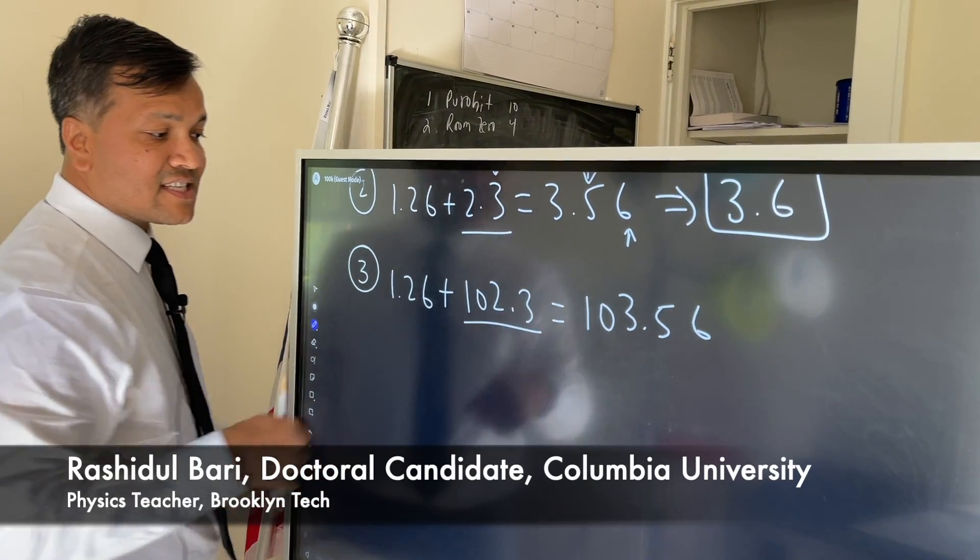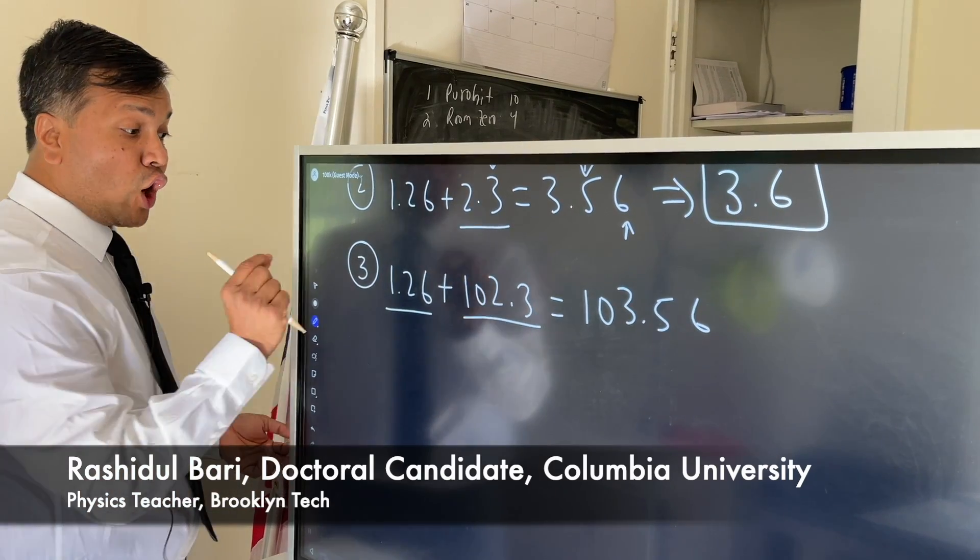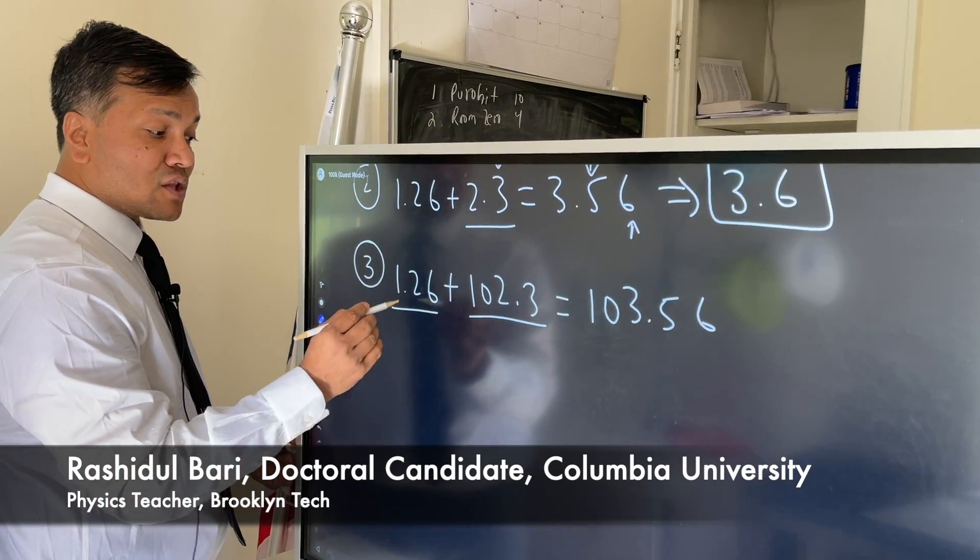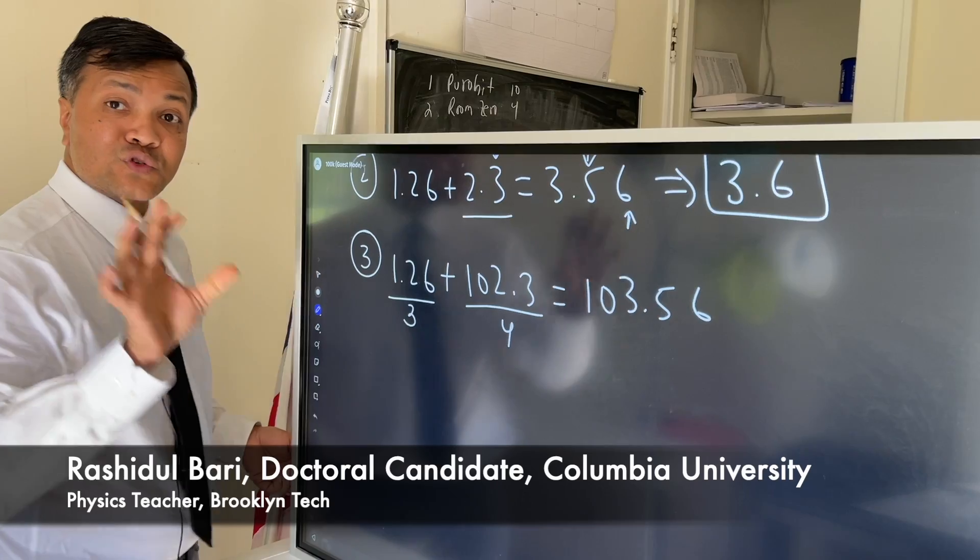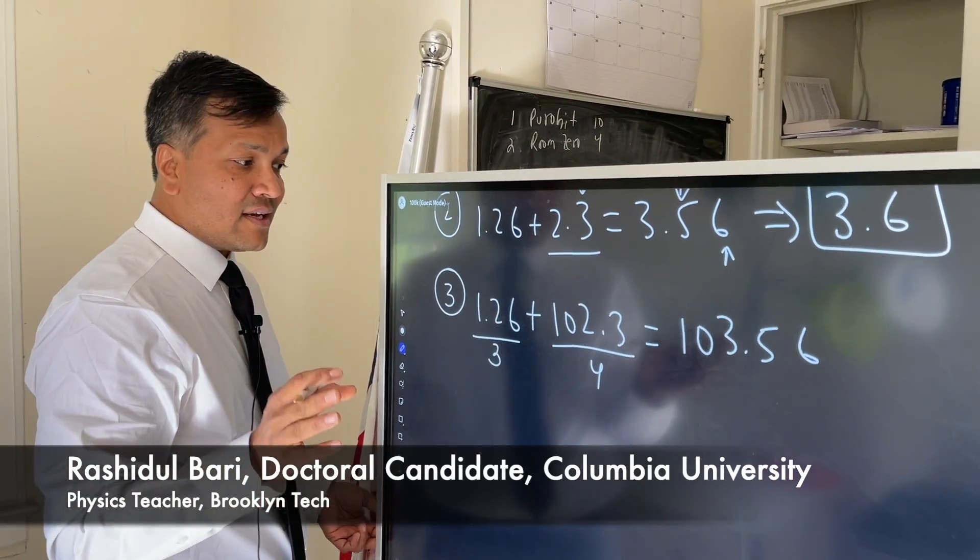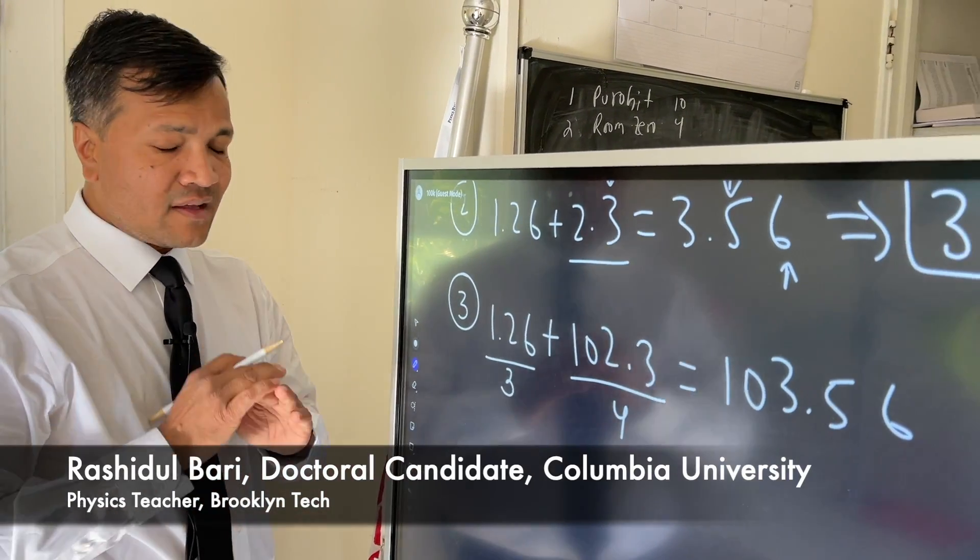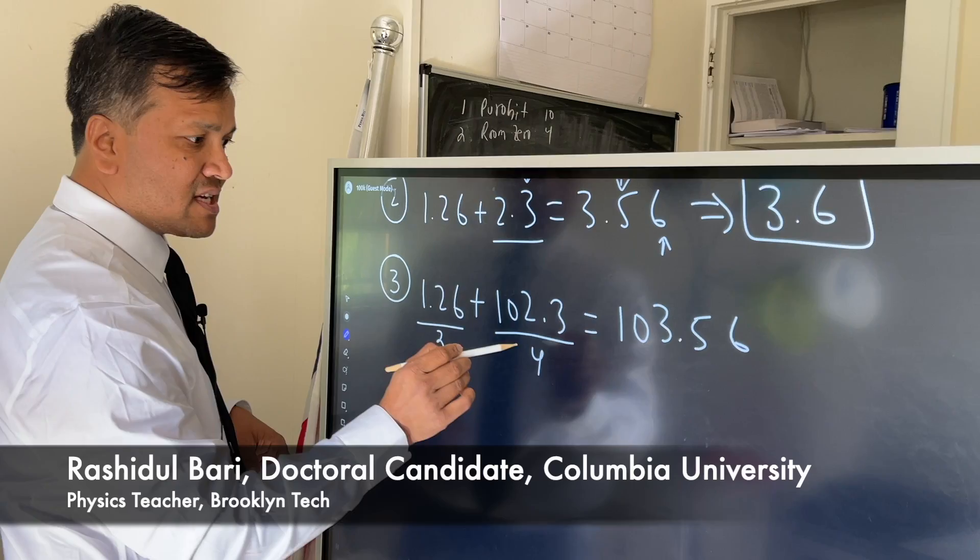This one is least precise, although this one has four sig figs. This one is most precise, although this one has three sig figs. Don't decide which one is most precise by the number of sig figs. Nothing to do with the number of sig figs. This one has more sig figs but is least precise. This one has fewer sig figs but is most precise.